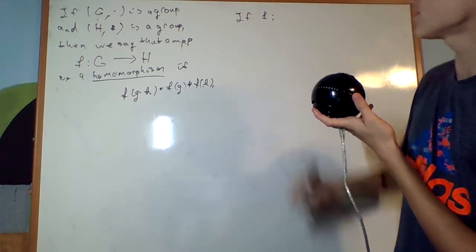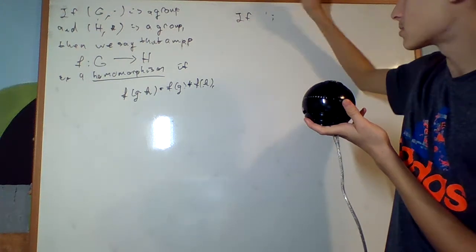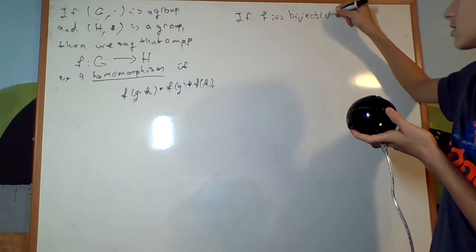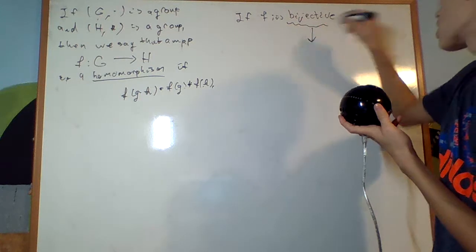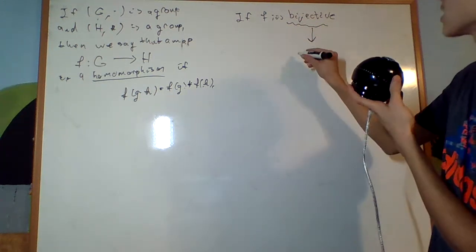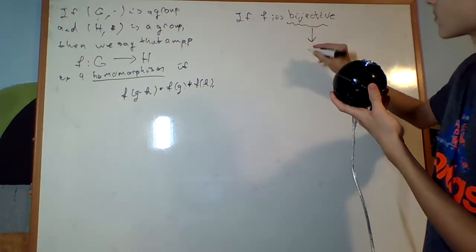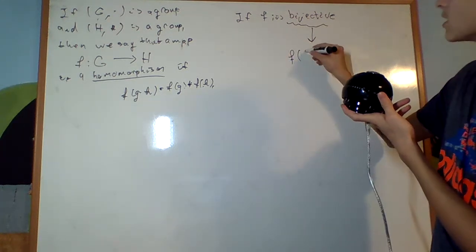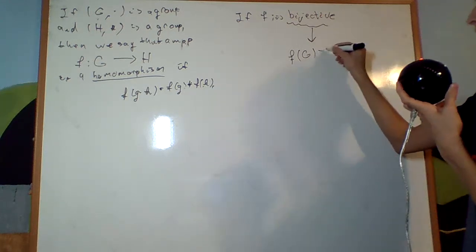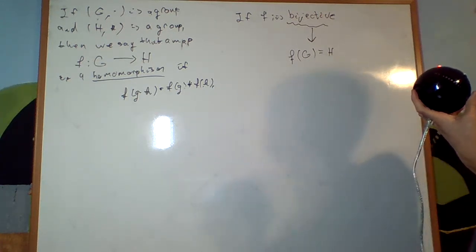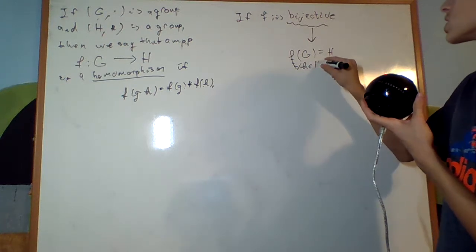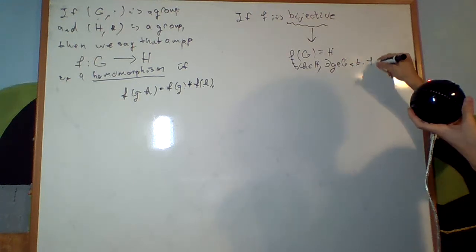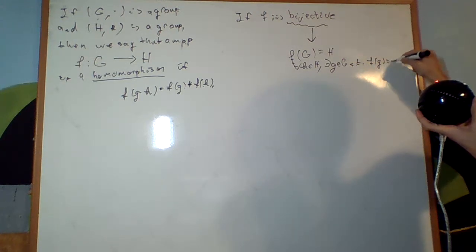And there's a special property. If F is bijective. What does bijective mean? Bijective means that the image of G under the map is H, basically meaning for every H in H, there exists G in G, such that F of G equals H. It's surjective.